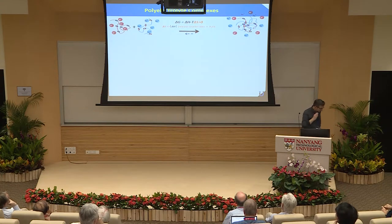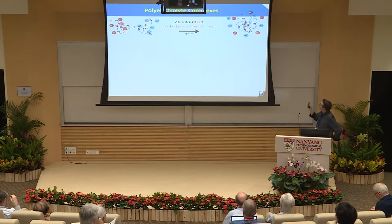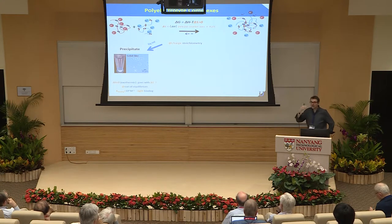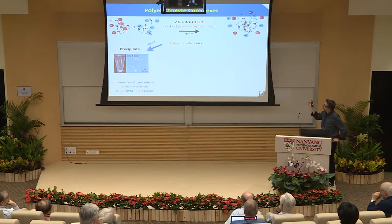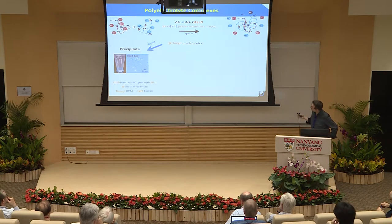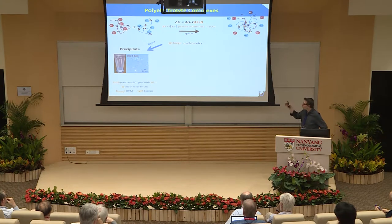Today I will focus my talk on polyelectrolyte complexes. This is a very well-known system. When you mix a positive and negative charged polyelectrolyte, they form complexes. The main driving force is entropy through the release of counter ions and sometimes smaller water molecules. Depending on the chemistry of the system, you can get either a precipitate — you see it at the bottom of your vial at charge stoichiometry — and the complexation enthalpy is always exothermic with high binding constants.